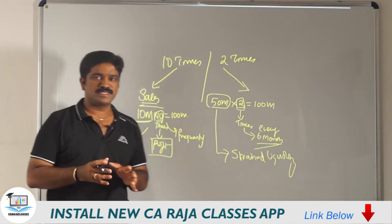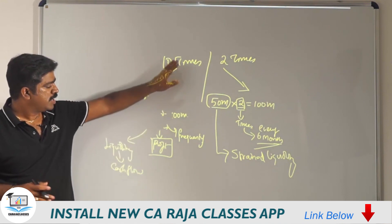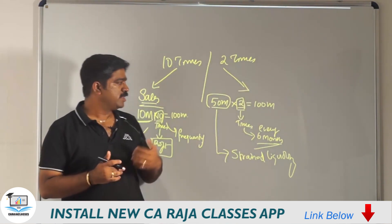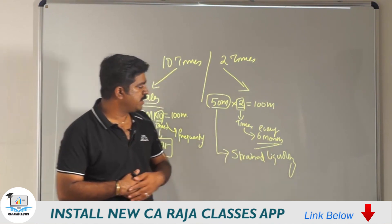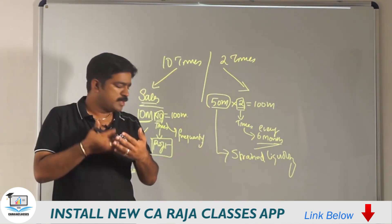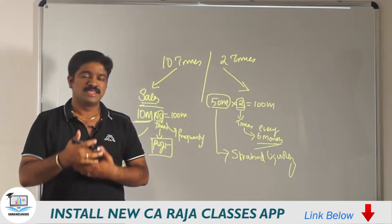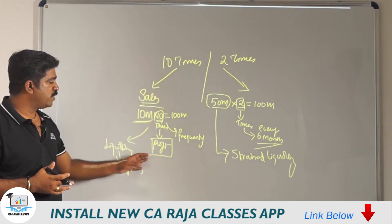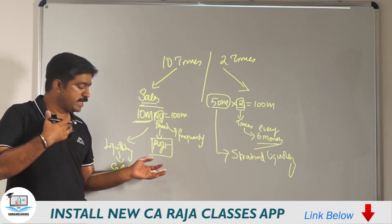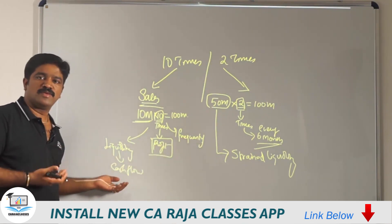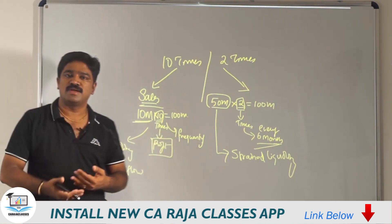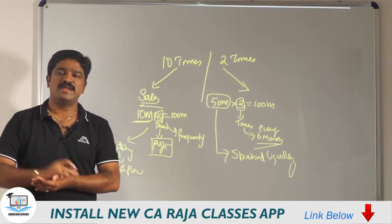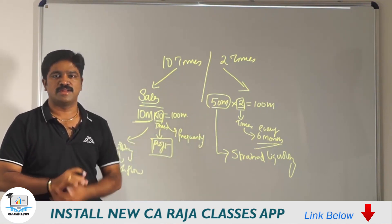So the key takeaway is: whenever inventory turnover ratio is higher, it is a good sign — it leads to improved profit, improved liquidity, frequent movement of goods, and frequent cash flows. When the ratio is lower, it can lead to strained liquidity, reduced profit-making ability, and poor cash flows. That's about inventory turnover ratio. In the next session I will take you through debtors turnover and creditors turnover. Thank you.